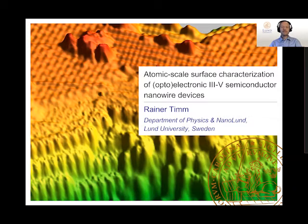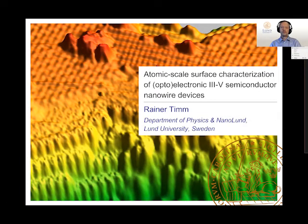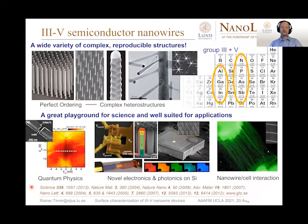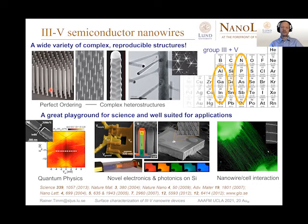Hello, I'm Rainer Timm from Lund University in Sweden. In this presentation I want to show you what we can learn from surfaces of semiconductor nanowires and nanowire devices. Here in Lund we have a strong focus on nanowires — single crystalline rods with diameters between 20 and 200 nanometers and a length of up to several micrometers, made of alloys of elements from the third and fifth column of the periodic table.